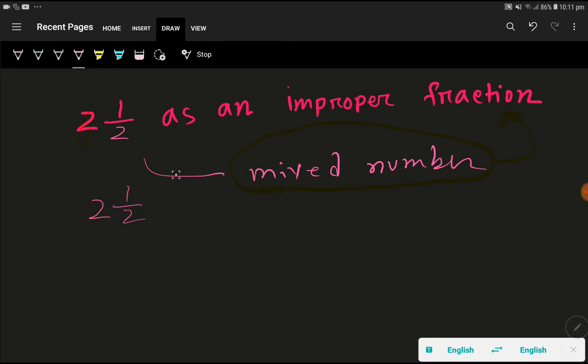To convert this mixed number to improper fraction, we multiply the whole number by the denominator - that is two here - then add the numerator and place the same denominator.